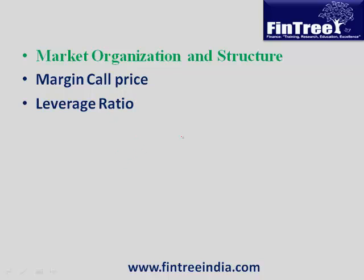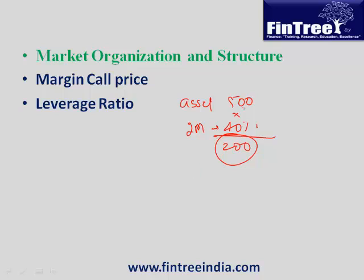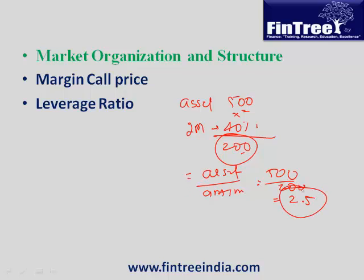The next formula is the leverage ratio. If an asset costs 500 and the initial margin is 40%, the amount required to invest is 500 × 40% = 200. So you can purchase a 500 asset with an investment of 200. Asset divided by amount invested gives 500 / 200 = 2.5. You don't even need to do this calculation — if the initial margin is 40, just compute 100 divided by 40 directly.